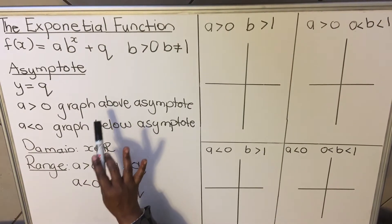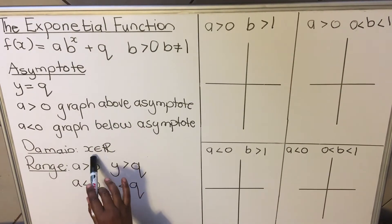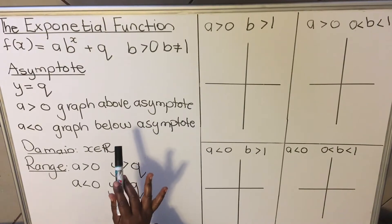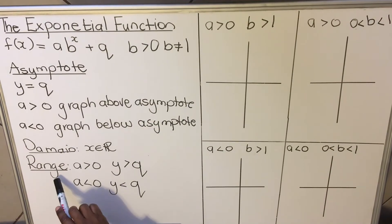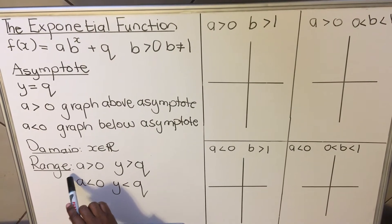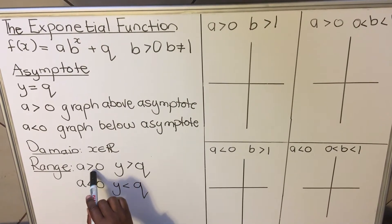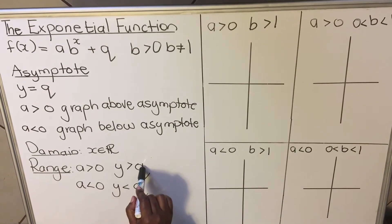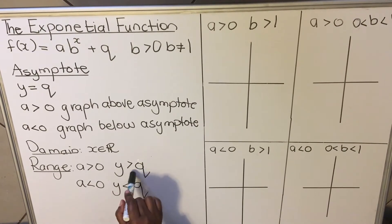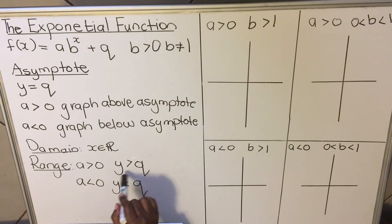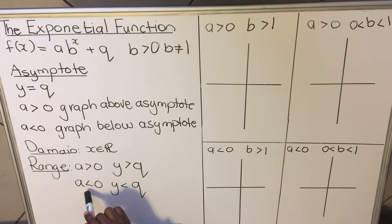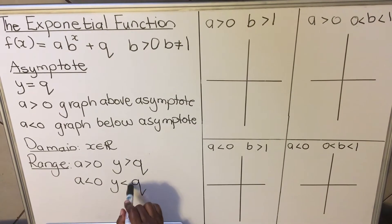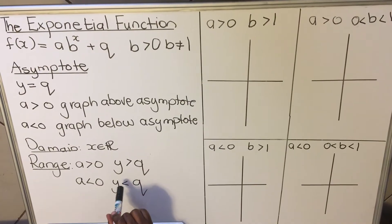Your domain with the exponential graph: X can be all real numbers, meaning all numbers are covered. Then your range will depend on your a. When your a is positive, your y will be greater than Q — that's your range. And when a is negative, your y is less than Q — that's your range.